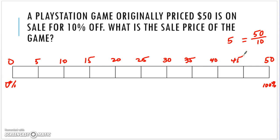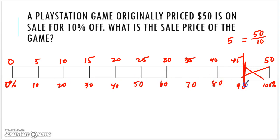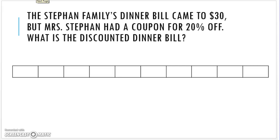Each section represents 10% of the $50, so I can find any multiple of 10%. It's 10% off, so I don't want that last box — I go all the way to the line at 90%. Since I'm not paying 10% of it, I am paying 90% of it. In this case, the PlayStation game will cost $45 after 10% is marked off.